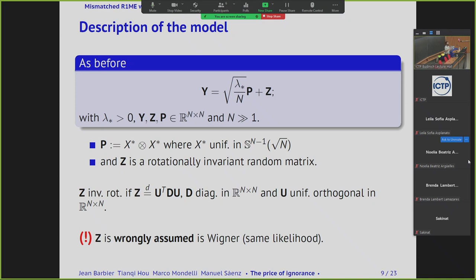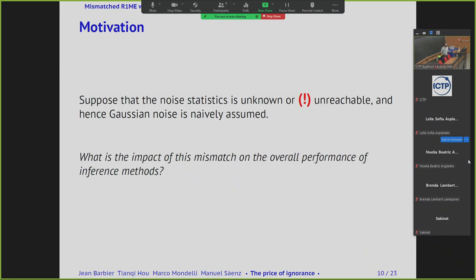The noise is not a Wigner matrix, so the distribution is much more general — a Wigner matrix is a rotationally invariant matrix with a very specific spectral distribution, while here we allow much more diverse spectral distributions. But although the data comes from this structured additive noise, the statistician is not aware of this complexity. A natural proposal is to just assume the noise is Gaussian — of course this is not correct, but it is a typical assumption used in many real practical situations. The question is: what is the impact on the inference task when you do so?